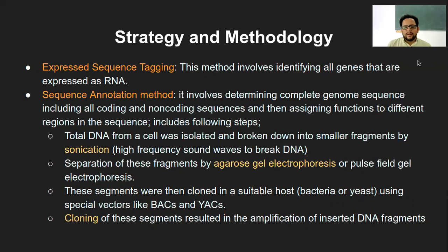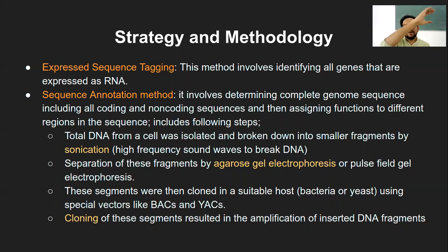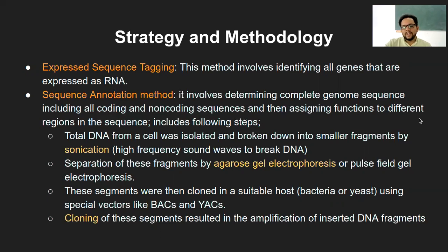The next method in sequencing is the sequence annotation method. The word 'annotation' means fitting the observed sequences into a particular position on the chromosome. It involves determining the complete genome sequence — including all coding and non-coding sequences — unlike EST which was specific to RNA. Functions are then assigned to the different regions in the sequence.